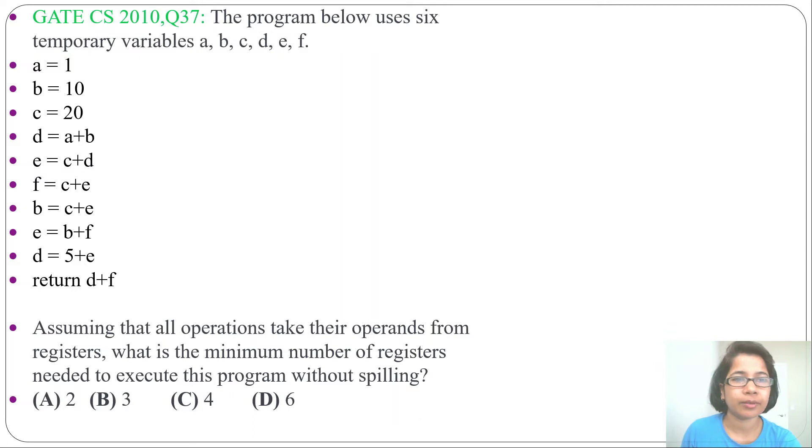Hi, let's solve one previous question of code generation compiler. This question was asked in GATE CS 2010 question number 37. The program below uses 6 temporary variables A, B, C, D, E, F.